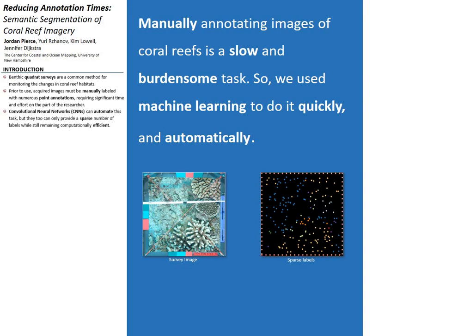Convolutional neural networks, a type of deep learning algorithm, are able to automate this task, but they too can only provide sparse labels while still staying computationally efficient.